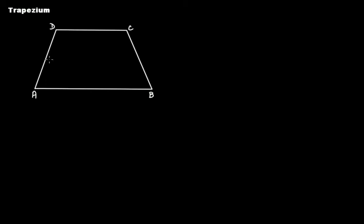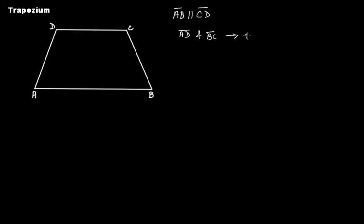In this figure we have a quadrilateral ABCD where AB is parallel to CD. We write it as AB is parallel to CD. AD and BC are non-parallel sides — this pair of sides AD and BC is non-parallel.